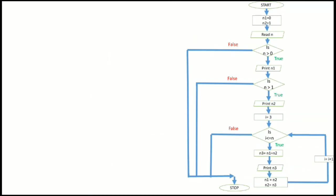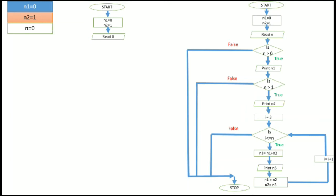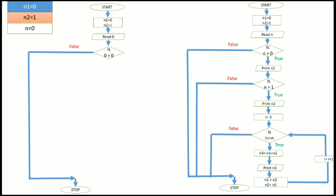Now we will take input and see how this works. We start the flowchart and initialize n1 equal to 0 and n2 equal to 1. Suppose n is 0. We check whether n is greater than 0: is 0 greater than 0? No, the condition is false. That means we stop the flowchart without printing any number, because a value of n equal to 0 means there will be no number in our series.